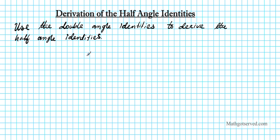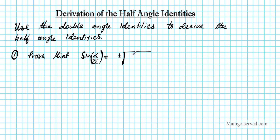There are going to be three parts: sine, cosine, and tangent. For the first one, we are going to prove that sine of alpha over 2 is equal to plus or minus the square root of 1 minus cosine alpha, all over 2. We are going to start by stating the double angle identity we'll use. We have five choices, but the one we are going to use for this proof is cosine 2θ equals 1 minus 2 sine squared θ.